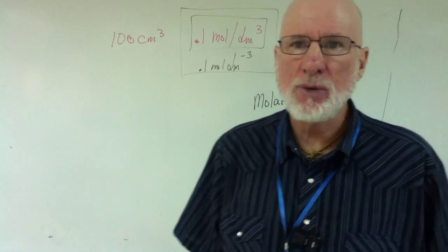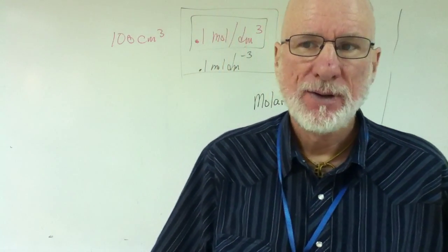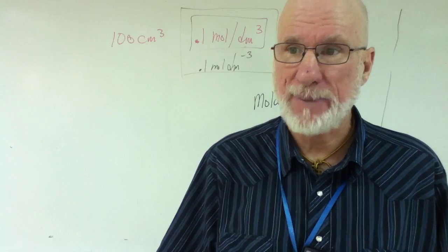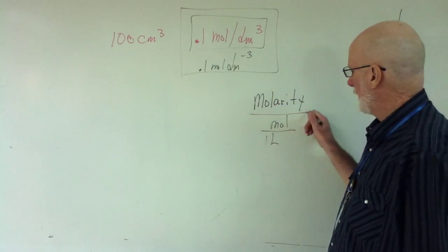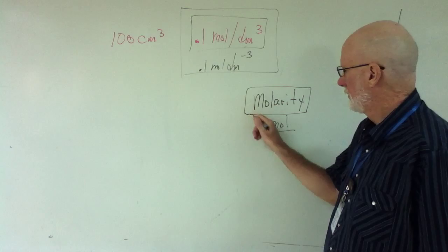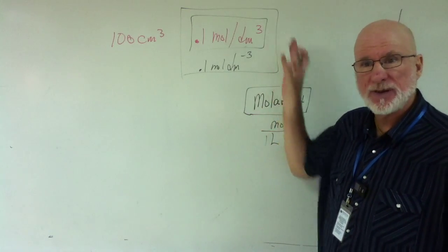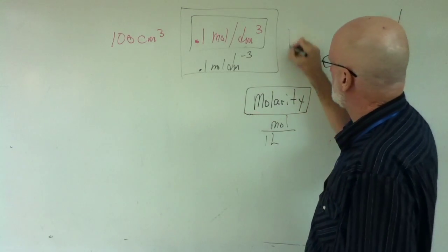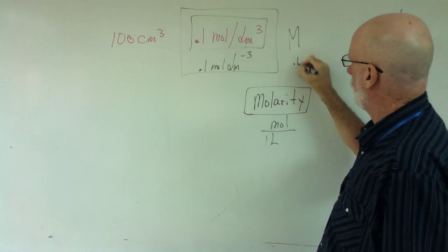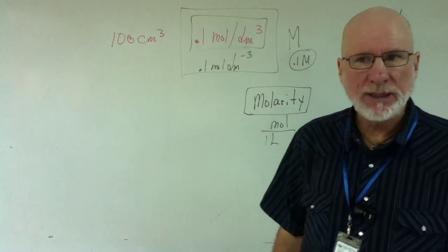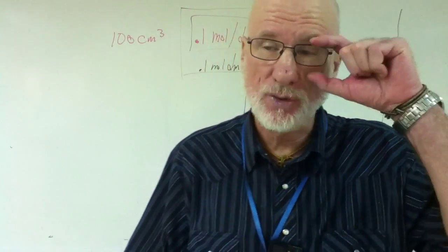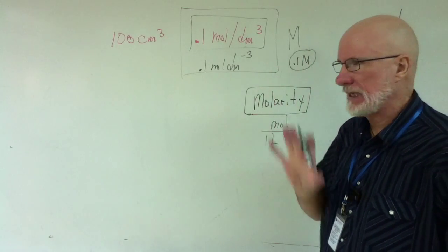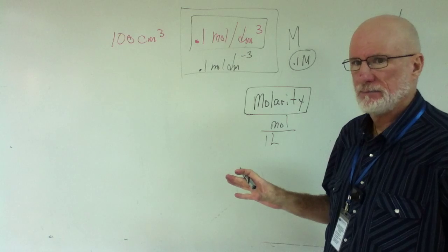There's two major ways, there's several ways of expressing concentration. One of the most common way with acids and bases is called molarity. And that's what the IB uses, but they don't call it molarity. Now, the way they abbreviate this is simply capital M. So it'd be 0.1 M. So if you look at some of my films on acids and bases and solutions and solution problems, it's exactly the same process.